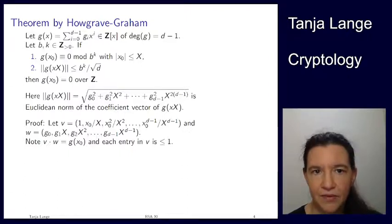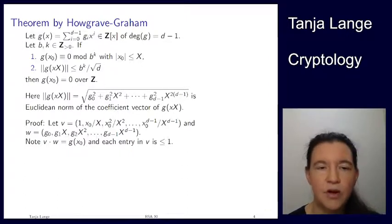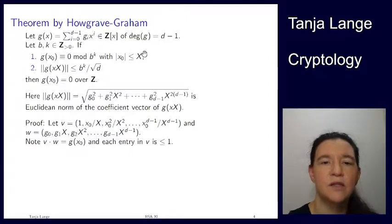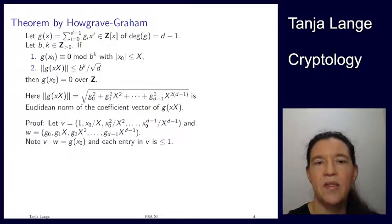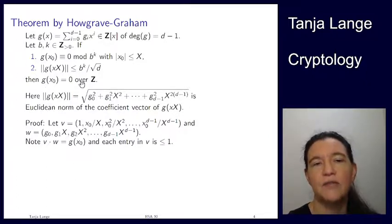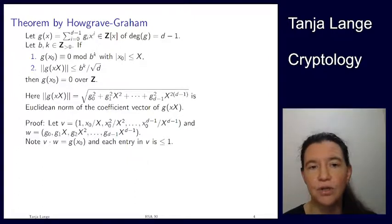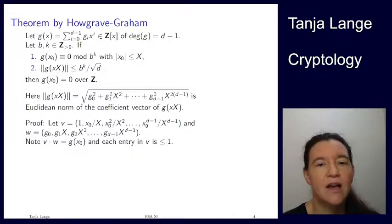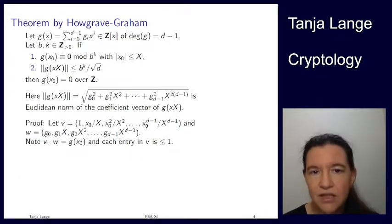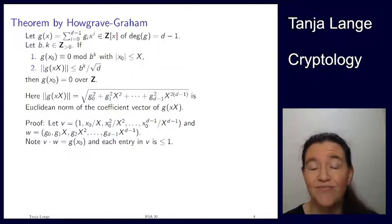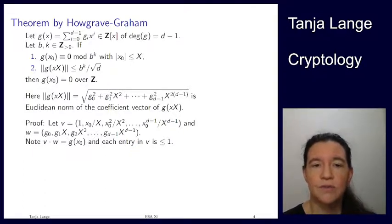If both conditions are satisfied, the theorem says the polynomial actually has a root over the integers — not just mod b^k. A root over the integers is what we really want because those are efficiently computable.